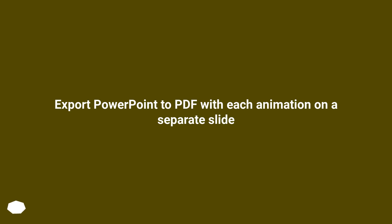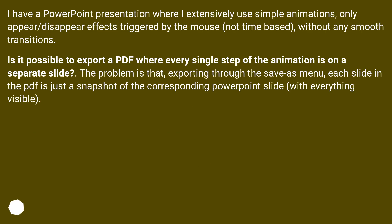Export PowerPoint to PDF with each animation on a separate slide. I have a PowerPoint presentation where I extensively use simple animations — only appear/disappear effects triggered by the mouse, not time-based, without any smooth transitions. Is it possible to export a PDF where every single step of the animation is on a separate slide?